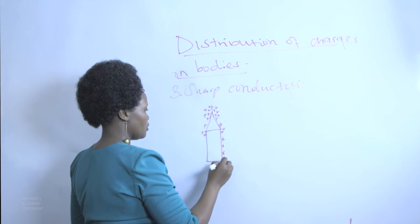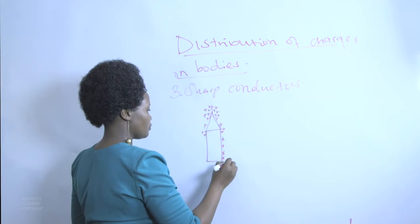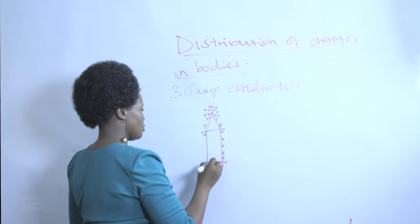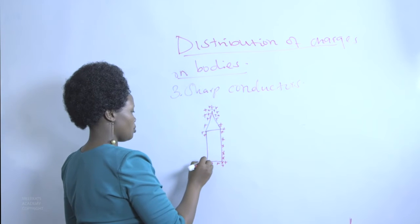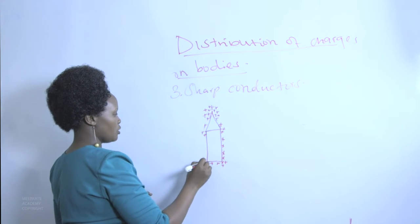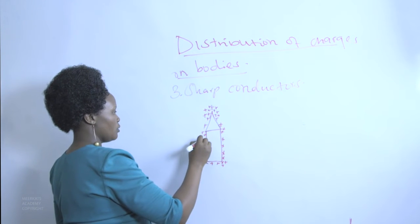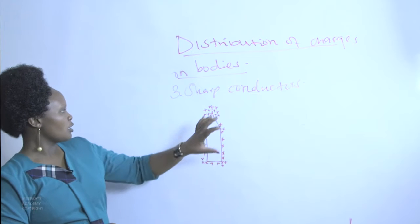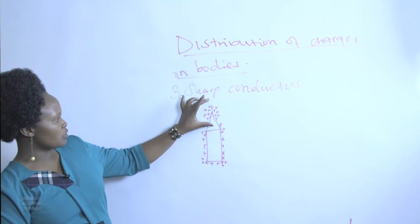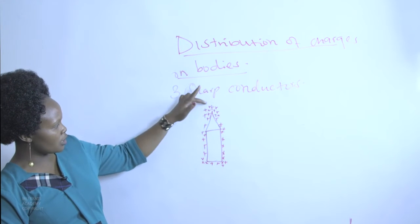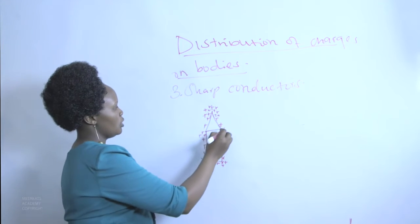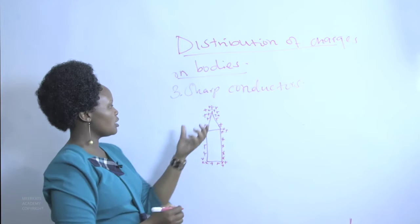Clearly, we have sharp points on the conductor where the density of charge is highest. The same applies at sharp corners — the density of charge is greatest at those sharp points.